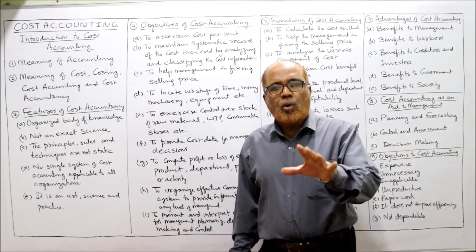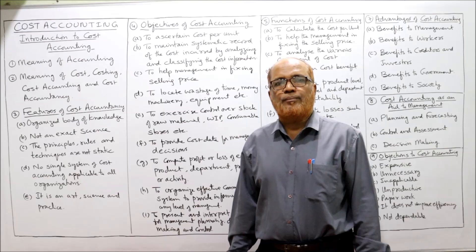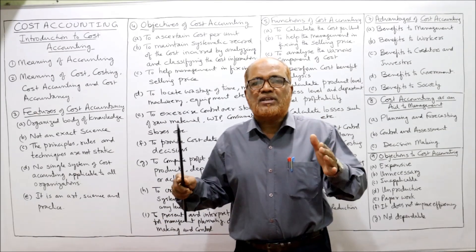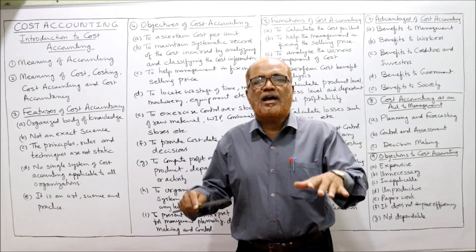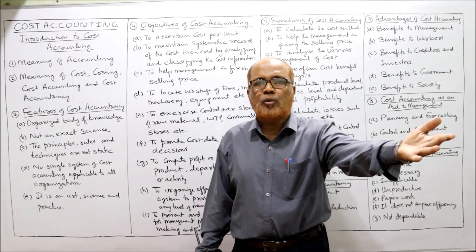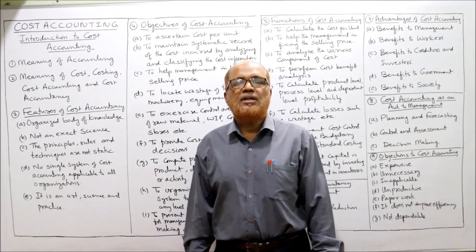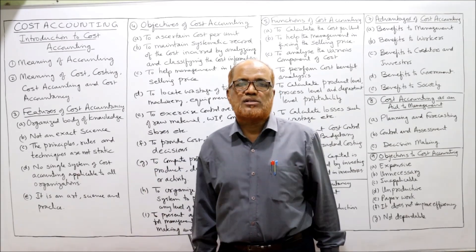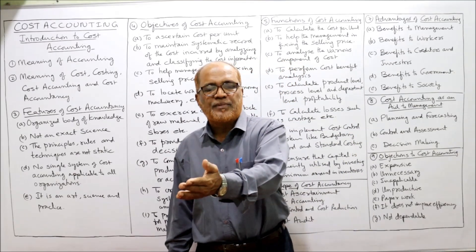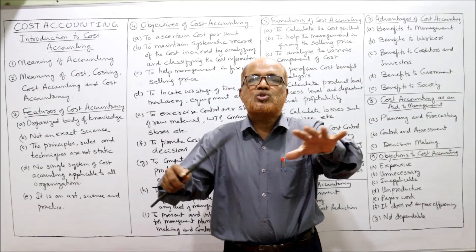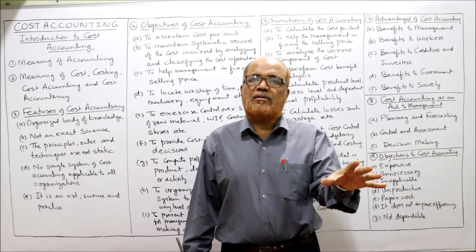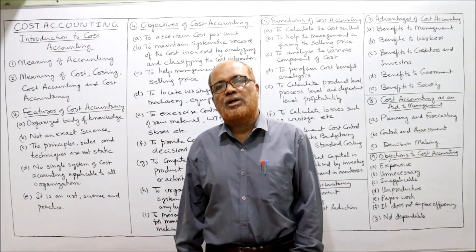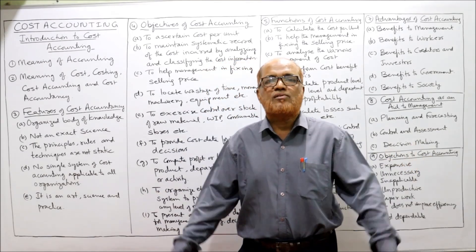The oldest form of accounting was financial accounting. Its main purpose is to prepare financial statements — recording, classifying, analyzing, summarizing, and interpreting financial transactions to prepare the profit and loss account and balance sheet. However, financial accounting has limitations: it is mainly for external users like creditors, investors, shareholders, bankers, and government. For internal management purposes, financial accounting does not serve the purpose.